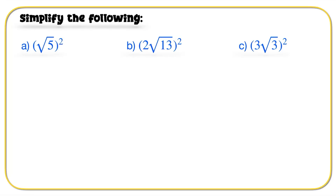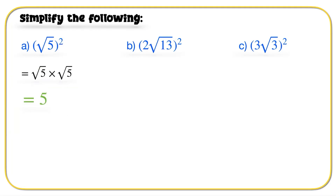For part A: root 5 times root 5 — when you multiply a root by itself, you end up getting the value under that root, which in this case is just 5.